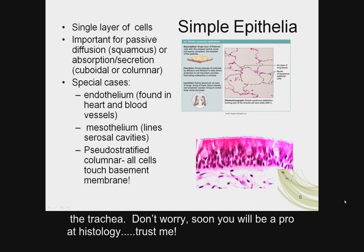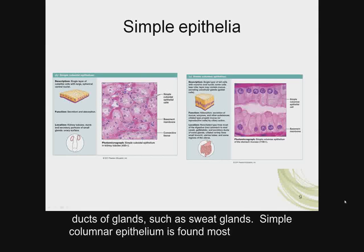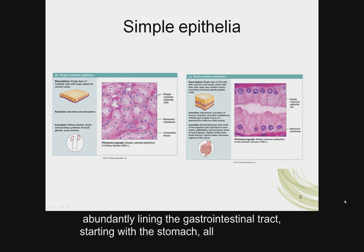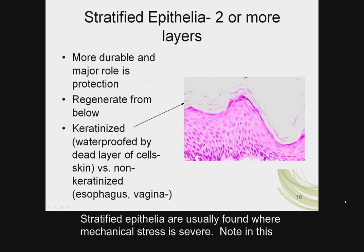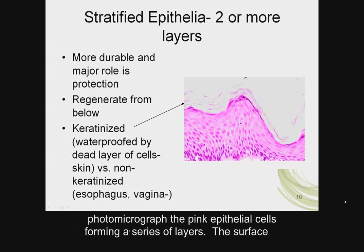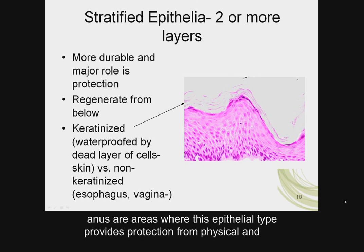Simple cuboidal epithelium is found most abundantly in the kidney tubules and lining the ducts of glands, such as sweat glands. Simple columnar epithelium is found most abundantly lining the gastrointestinal tract, starting with the stomach all the way to the anal canal. Stratified epithelia are usually found where mechanical stress is severe. Note in this photomicrograph the pink epithelial cells forming a series of layers. The surface of the skin and the lining of the mouth, throat, esophagus, rectum, and mature vagina and anus are areas where this epithelial type provides protection from physical and chemical attack.